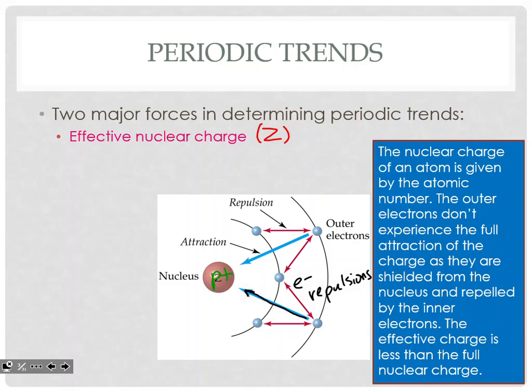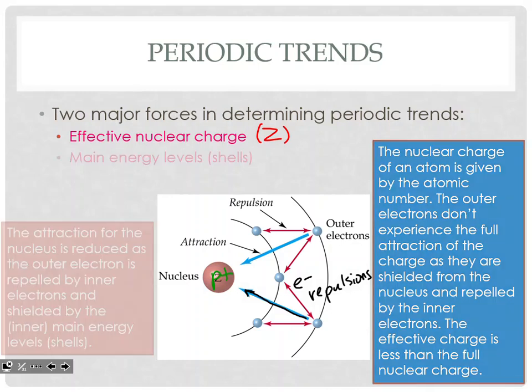What you should be referring to when you state a reason is: the trend does this because it has a greater effective nuclear charge. Or, it is doing this because it has fewer protons, so it doesn't have as high an effective nuclear charge. For instance, on free response on a test, where you need to state a reason for a trend, that is one of the possible choices you will choose from for stating a reason.